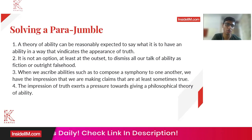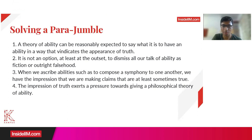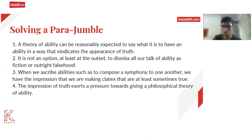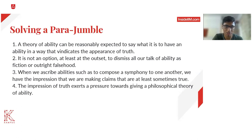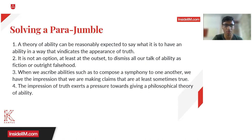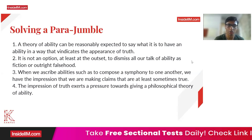Second: 'It is not an option, at least at the outset, to dismiss all our talk of ability as fiction or outright falsehood.' This doesn't seem to be the starter as it starts with 'it,' meaning it refers to something before. Third: 'When we ascribe abilities such as to compose a symphony, we have the impression that we are making claims that are at least sometimes true' — so third is probably a good starter. Fourth says: 'The impression of truth exerts a pressure towards giving the philosophical theory of ability.' So three and four are a mandatory pair.